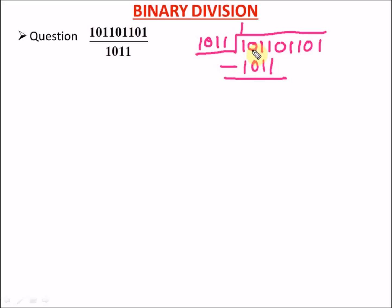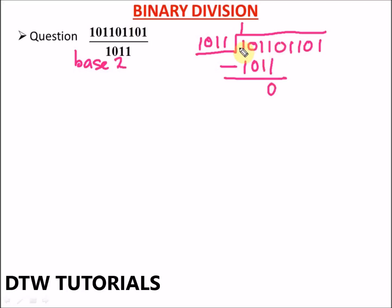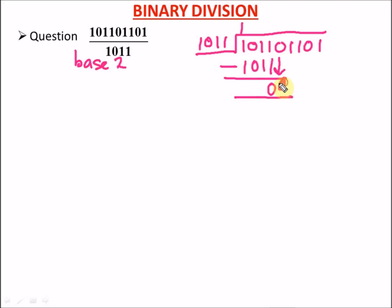We subtract — remember, we're doing this in base 2, so everything is binary. When we subtract, 1011 minus 1011 gives us zero. We then drop down the next digit, which is zero, giving us 00.